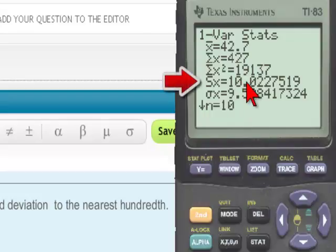The SX value that we see here is the standard deviation, and if we take that to the nearest hundredth it will be 10.02.